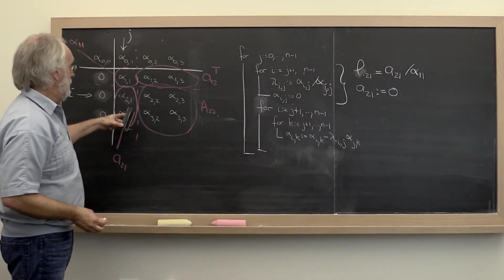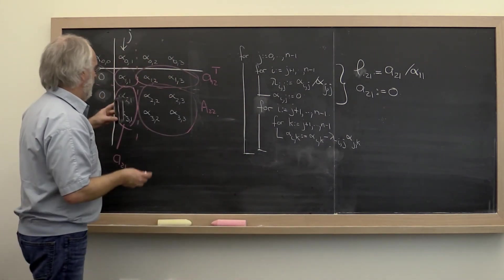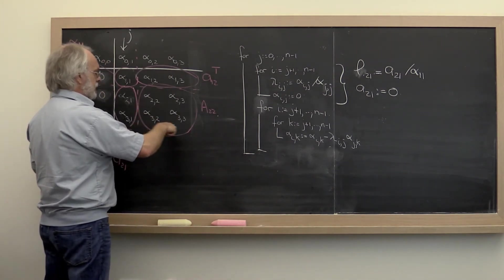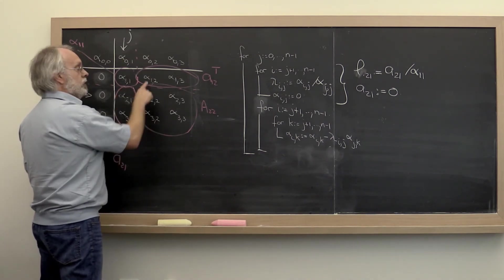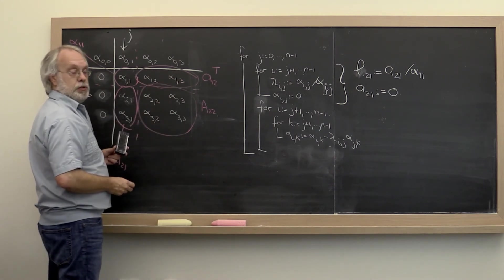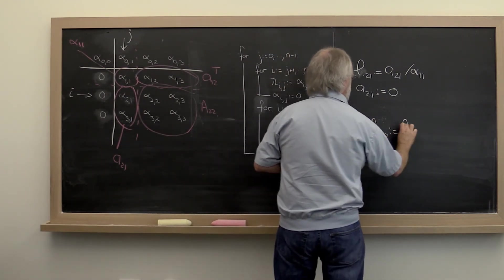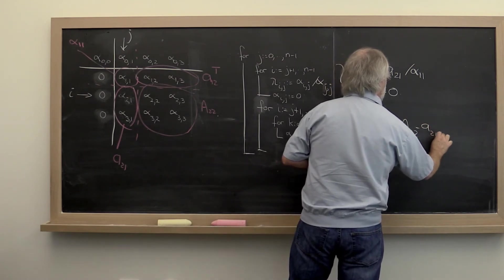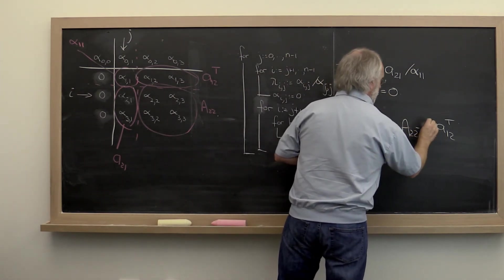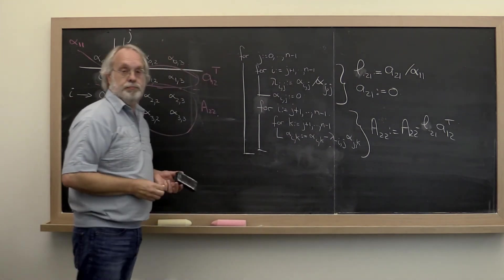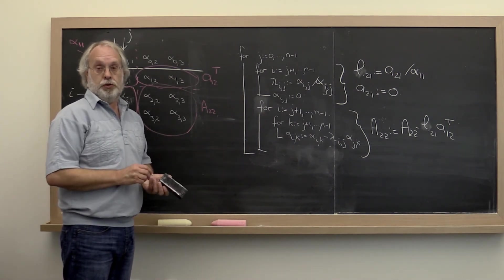We have this double nested loop. If you think about it very carefully, what that loop does is it takes this submatrix and subtracts off the outer product that consists of a_2,1 times a_1,2 transpose. So this double nested loop updates a_2,2 by subtracting off a_2,1 times a_1,2 transpose. Actually not a_2,1 because we set that to 0, so I should say l_2,1. Now we're getting pretty close to something that looks like the algorithm that we claimed computed LU factorization.